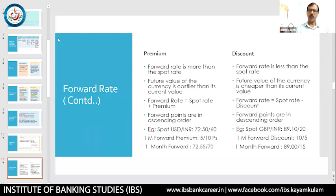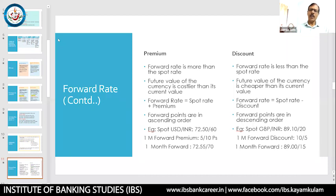For a discount example: spot GBP/INR 89.10/89.20, one-month forward discount 10/5 paise. To get the one-month forward buying rate, take spot buying 89.10 and subtract 10 paise to get 89.00. To get the forward selling rate, take spot selling 89.20 and subtract 5 paise to get 89.15. Sometimes questions do not state whether it is a premium or discount — they just say forward points. If the forward points are in ascending order (e.g., 5 then 10), the currency is at a premium. If they are in descending order (e.g., 10 then 5), the currency is at a discount.